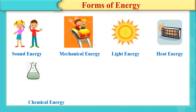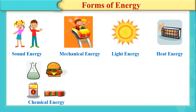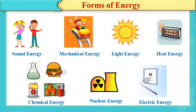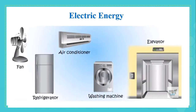Chemical energy is caused by chemical reactions. You find chemical energy stored in batteries, fuel, as well as in the food you eat. Nuclear energy is released by reactions within the nuclei of atoms. Nuclear energy can be used to generate electricity. Electric energy is the form of energy we use most nowadays.